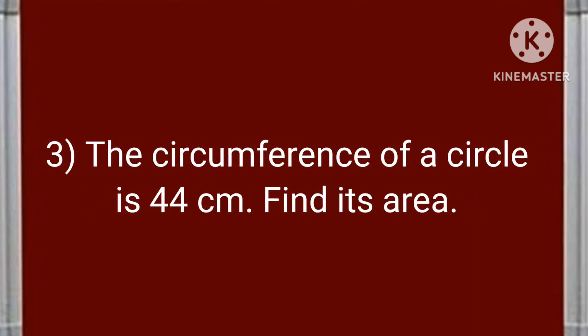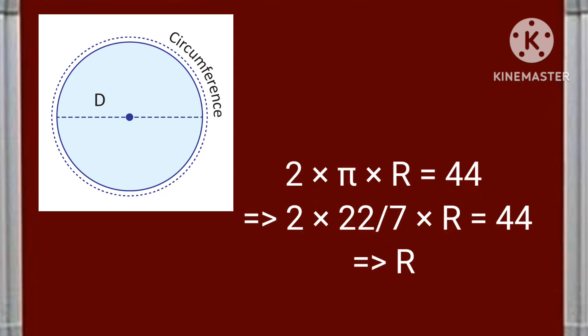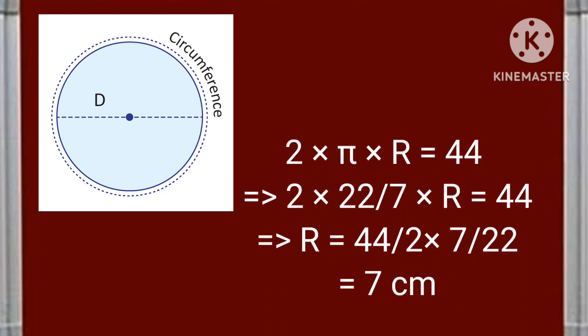Now let's see our third example here the circumference of a circle is 44 centimeter. Find its area. Now let's see how to solve this interesting problem. Here the value of circumference gave and from that we have to calculate the radius first and then from radius we have to calculate the area of the circle. So 2 pi r is equal to 44 then I am putting the value of pi here 22 by 7 then 22 into 22 by 7 into r means 44 then r will be equal to 7 centimeter.